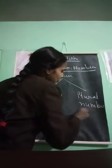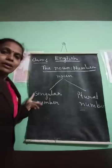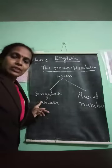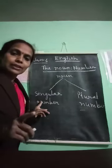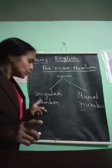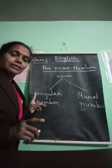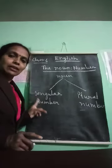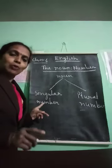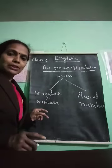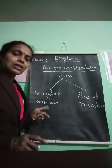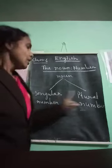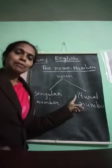Singular number means the noun which stands for only one person or thing is called singular number, or you can say that the noun which denotes only one person or thing is said to be in singular number.